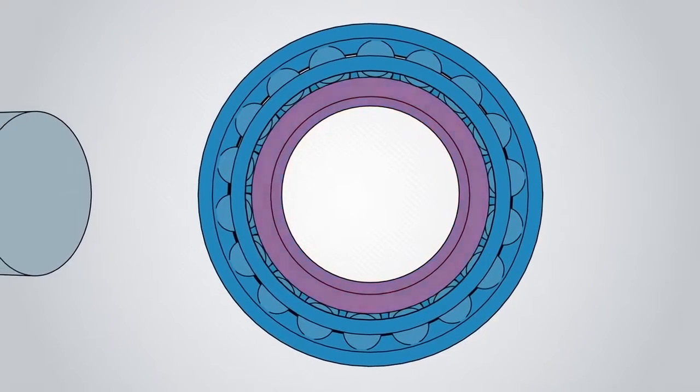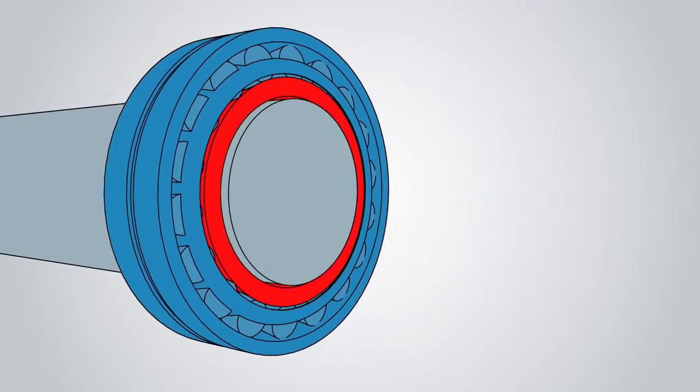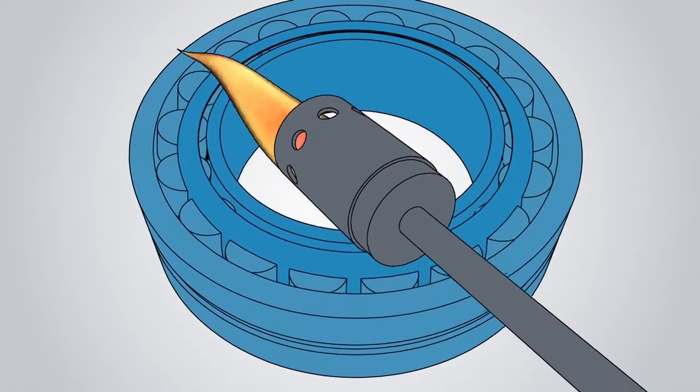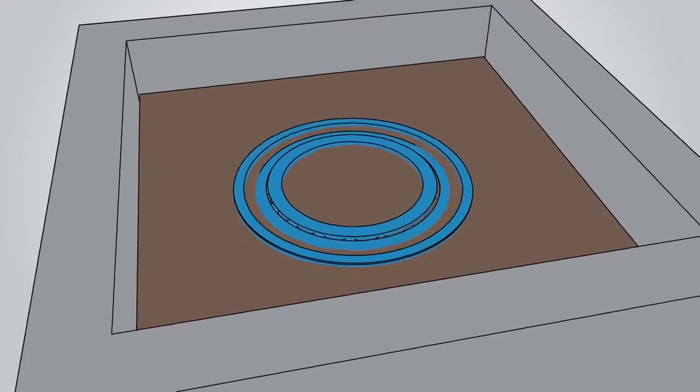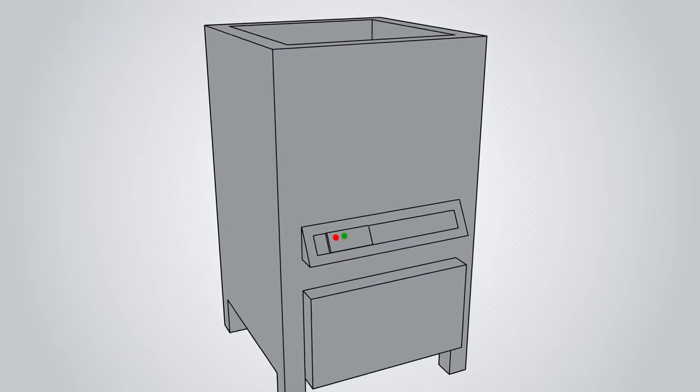This is why heat is used to expand the bearing inner ring before placing on the shaft. As the bearing cools, a stronger interference fit results. Direct flame should never be used as the bearing can be damaged. Oil baths were once popular but can be slow, dirty, and present significant handling hazards.